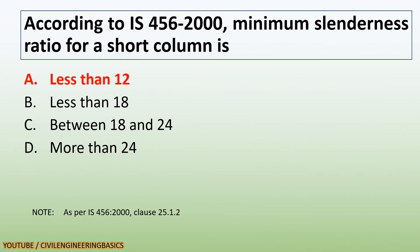According to IS 456-2000, minimum slenderness ratio for a short column is less than 12.